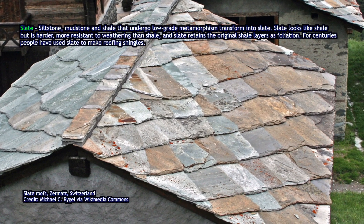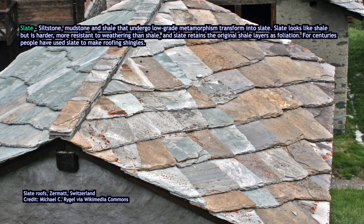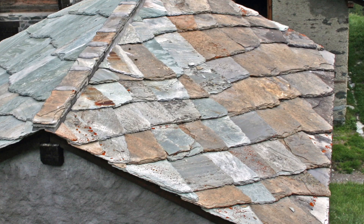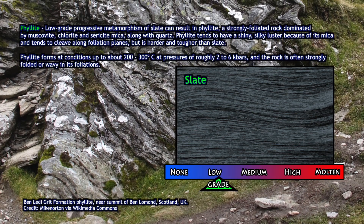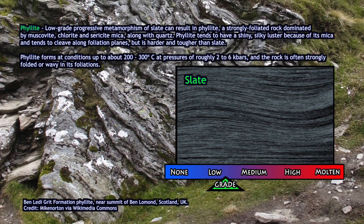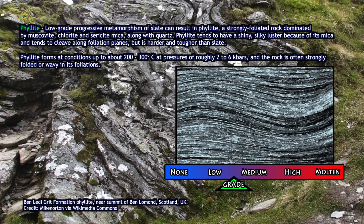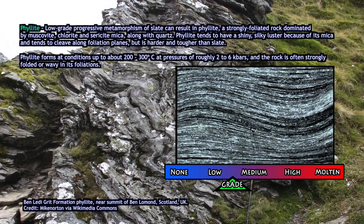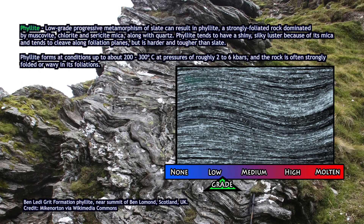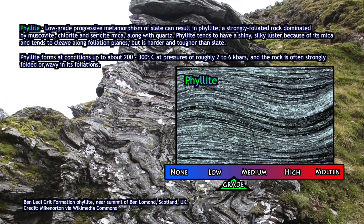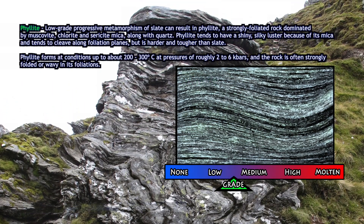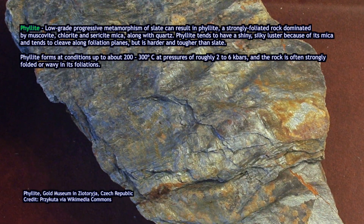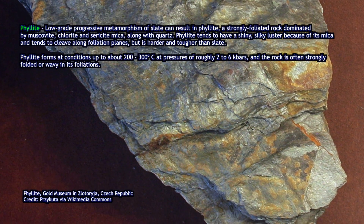If you take slate and metamorphose it further, going up to a medium grade of metamorphism, you can change the rock into what we call phyllite, which is essentially similar to slate but with a lot more obvious mica in it. The mica tends to be very reflective and handsome. Phyllite tends to be very mica-rich because at that grade of metamorphism, a lot of the clay minerals that were in the sedimentary rock are recrystallizing into other minerals — starting with clays turning into muscovite and chlorite mica.